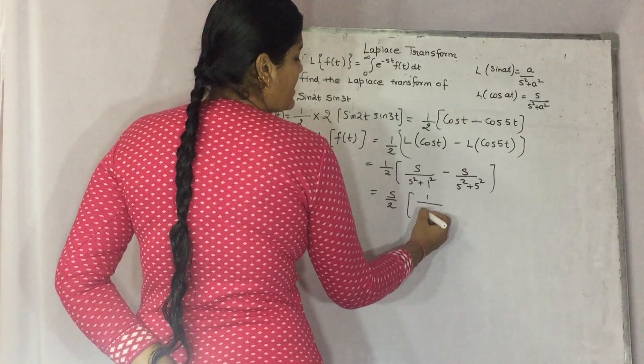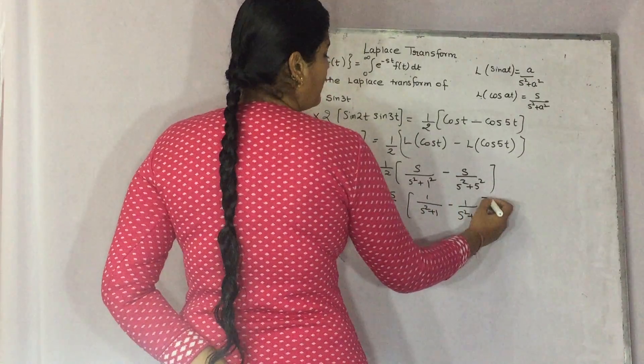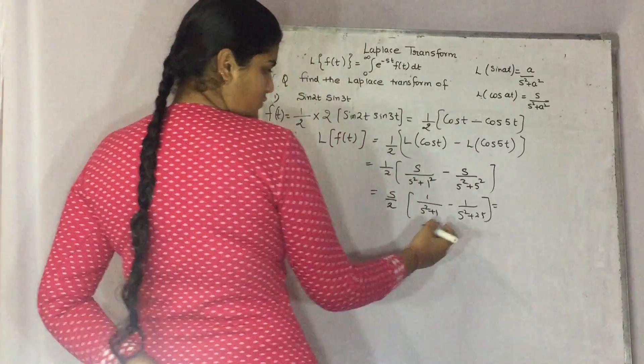1 by s square plus 1 minus 1 by s square plus 25.